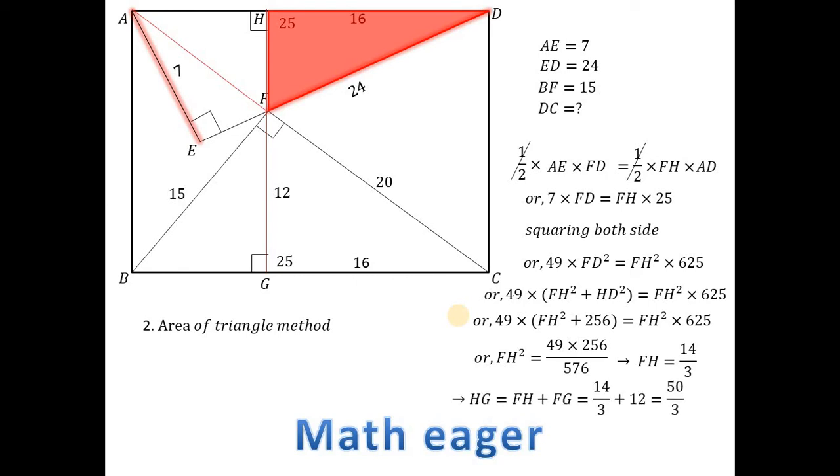Now, FG is FH plus HG. FH is 14/3, FG is 50/3. Since HGCD is a rectangle, DC is equal to HG, so it gives the value of DC is 50/3. So using area of triangle method, we solve this problem.